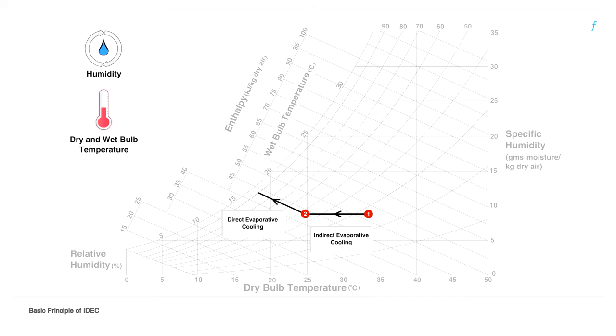In the second stage or the direct stage, the air is cooled and humidified as can be seen in the psychrometric chart. The dry bulb temperature is reduced further and humidity sees a slight increase here.